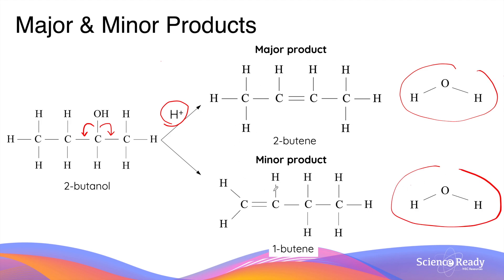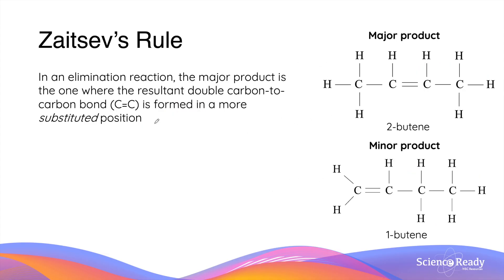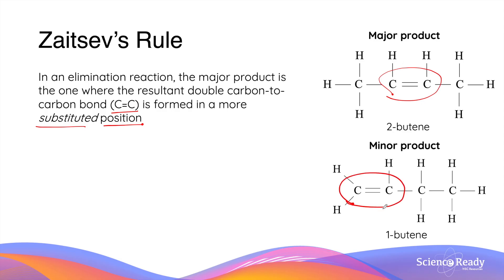In this particular dehydration example, 2-butene is the major product whereas 1-butene is the minor product. The production of major and minor products in an elimination reaction is explained by Zaitsev's rule, which states that the major product is the one where the resultant carbon-to-carbon double bond is formed in a more substituted position. Structurally, this means that in the major product, the double bond prefers to be in the middle of the organic compound rather than at the terminal end, as seen in 1-butene.